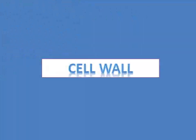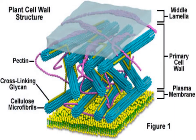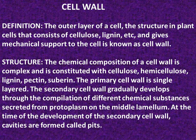First of all, we will learn about cell wall. This is a diagram of a cell wall. The definition: the outer layer of a cell — the structure in plant cells that consists of cellulose, lignin, etc. — that gives mechanical support to the cell is known as the cell wall.